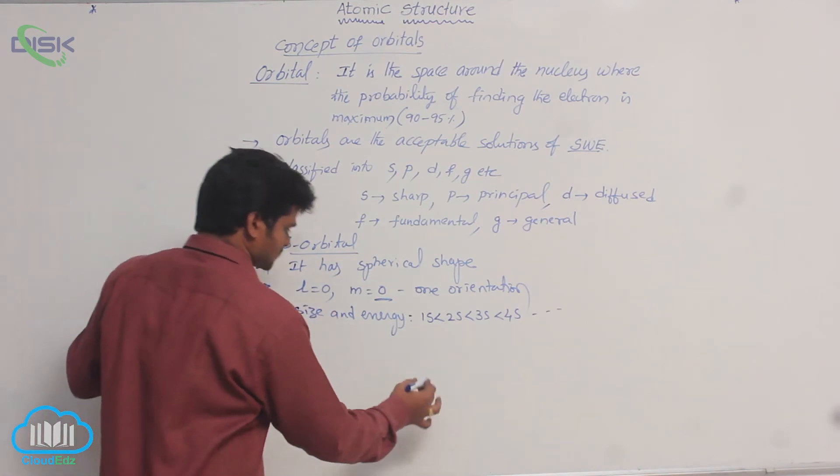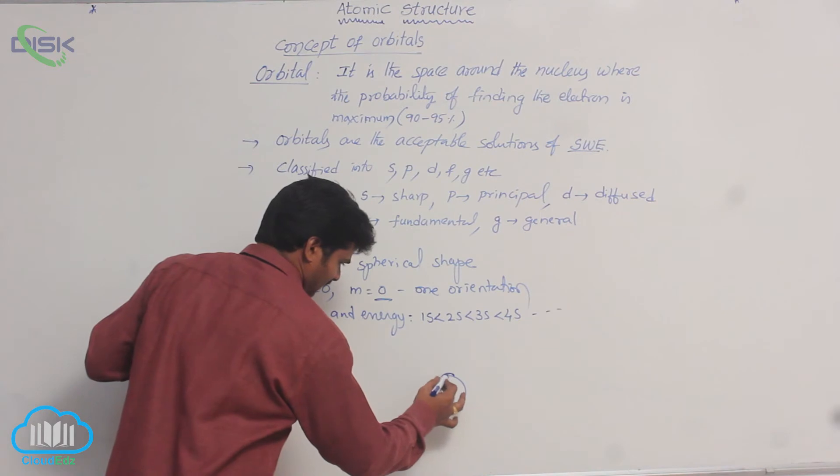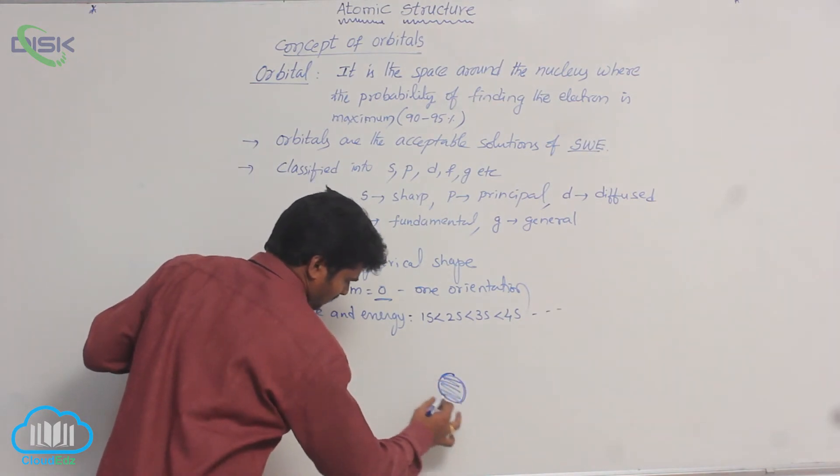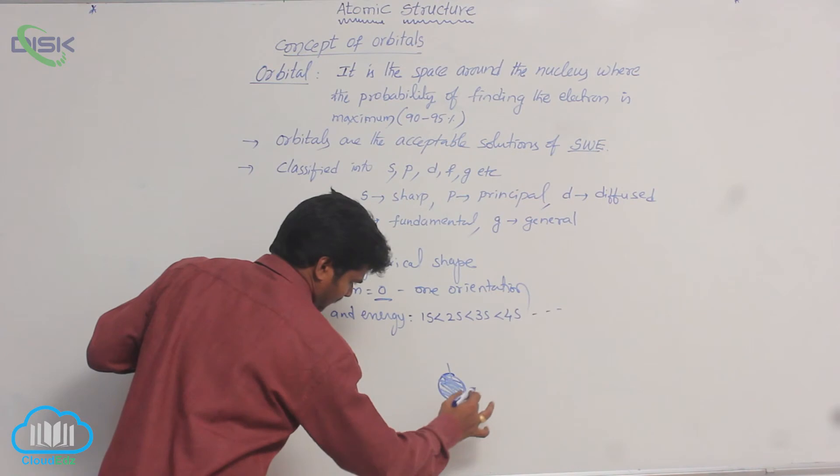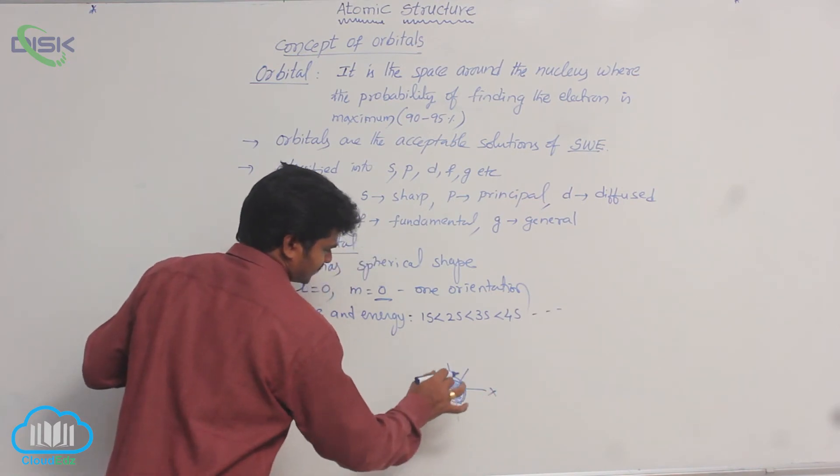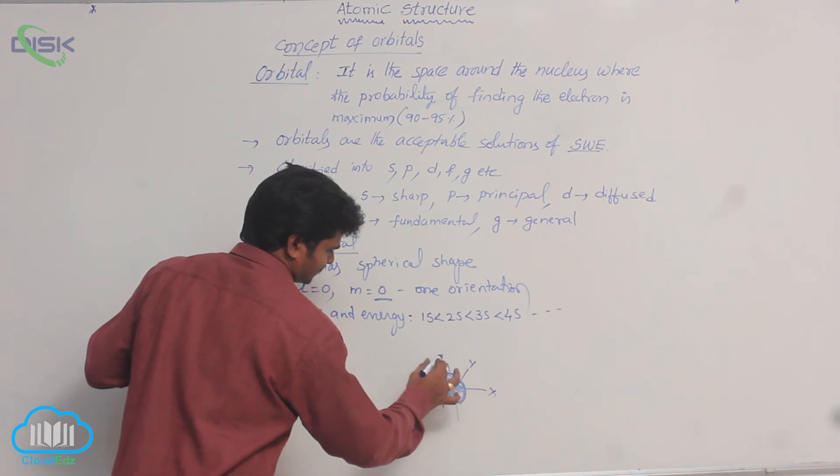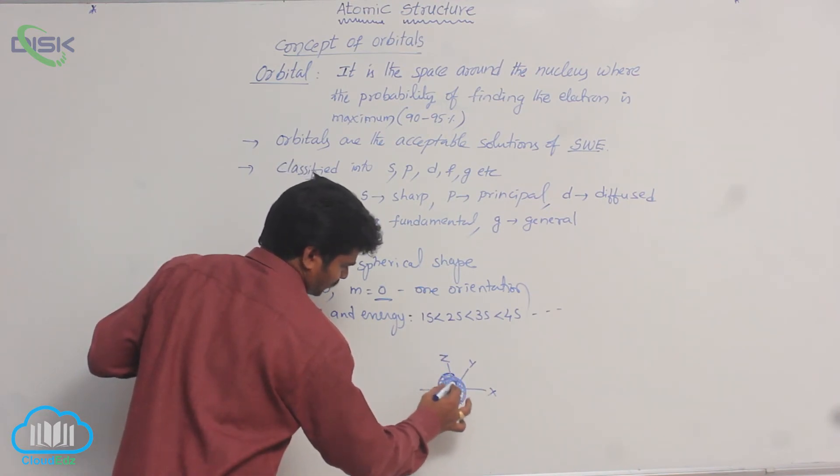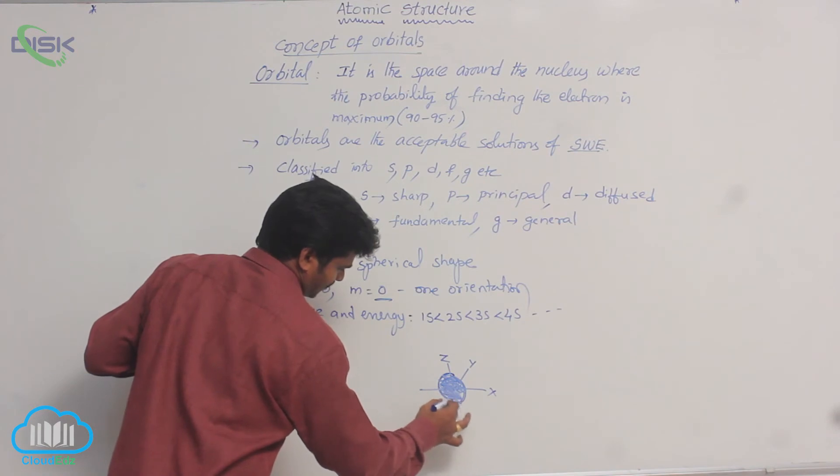You know, spherical shape means, this is the shape. This is all spherical shape. X, Y, some Z. X axis, this is some Y axis, this is some Z axis. This is a sphere. It is S orbital shape.